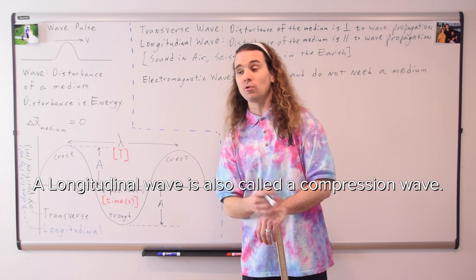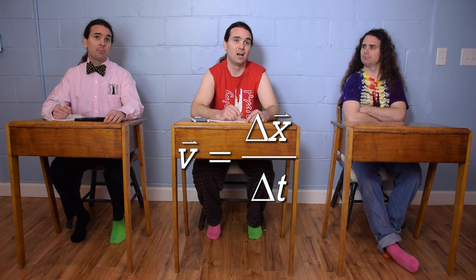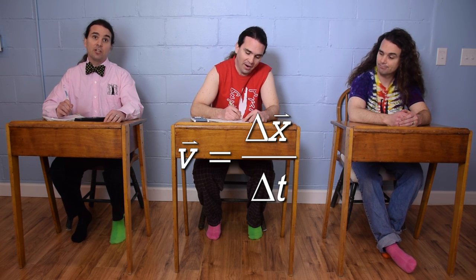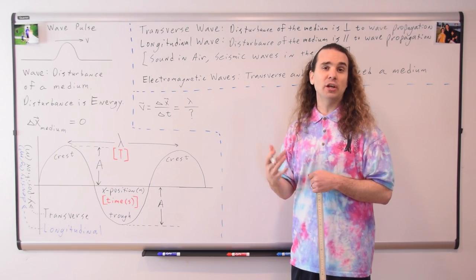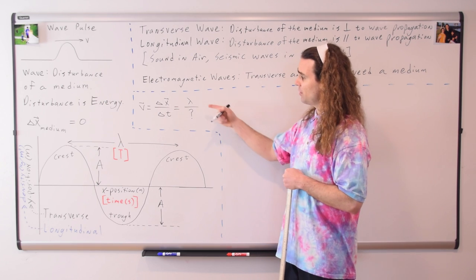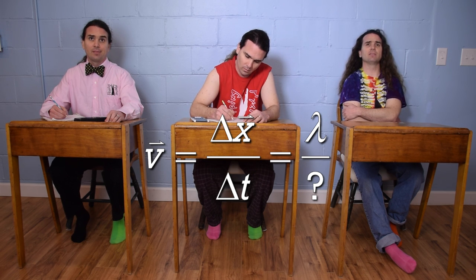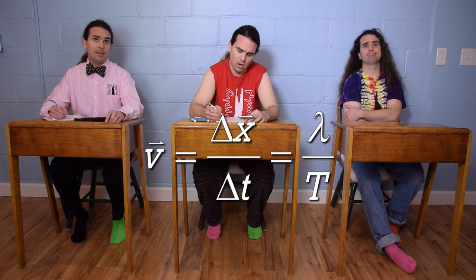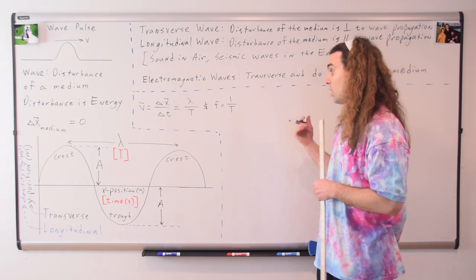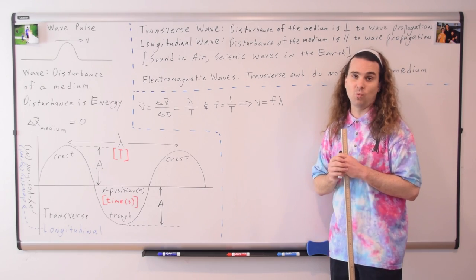Velocity equals change in position over change in time. If the wave has gone through a distance of one wavelength, how long did that take? The wavelength is the distance a wave travels during one full cycle, and the period is the time it takes for one full cycle, so the time for one wavelength is the period. And frequency equals one over the period. Therefore, the velocity of a wave equals its frequency times its wavelength.